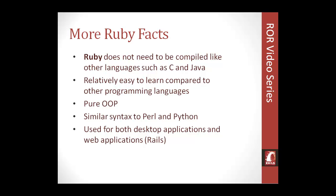Some other Ruby facts: Ruby doesn't need to be compiled like many other languages such as C, C++, or Java. With those languages you'd need an IDE to run them through a compiler, which uses more resources. Ruby doesn't have to be compiled — it's just read as it's written. That's a really good plus for Ruby.